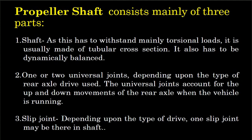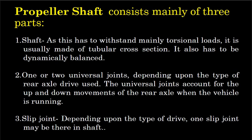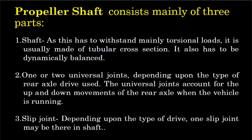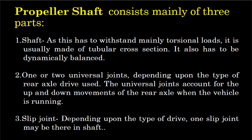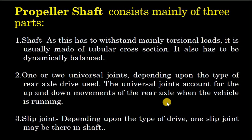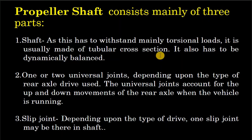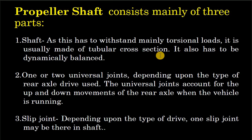Propeller shaft consists mainly of three parts: first, the shaft itself; second, universal joint; and third, slip joint. ये तीन parts इसमें लगे होते हैं। As this has to withstand mainly torsional loads, it is usually made of tubular cross section. इस पर मुख्य रूप से torsion का load सहन किया जाता है, अतः ये tube की तरह बनाया जाता है। इसे dynamically संतुलित भी होना चाहिए।